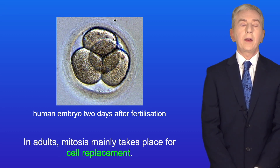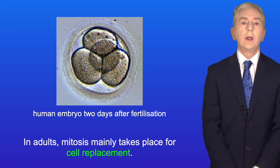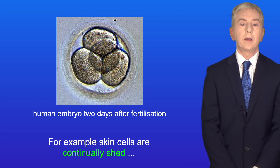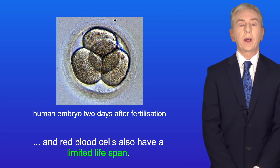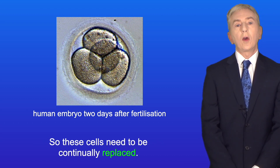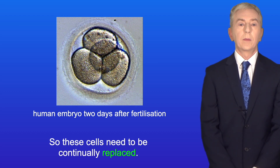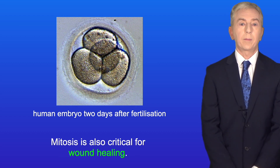In adults, mitosis mainly takes place for cell replacement. For example, skin cells are continually shed, and red blood cells also have a limited lifespan, so these cells need to be continually replaced. Mitosis is also critical for wound healing.